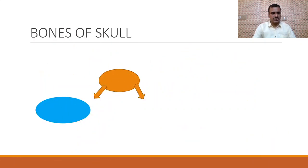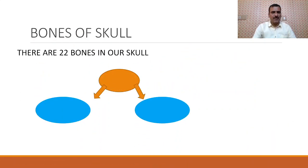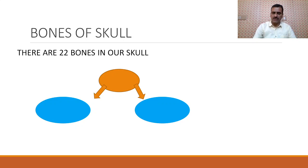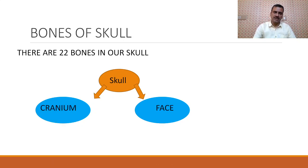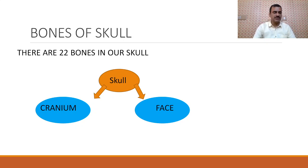The bones of skull. There are 22 bones in our skull which are divided into two groups. What are those groups? These are cranium and face. We will discuss them separately.